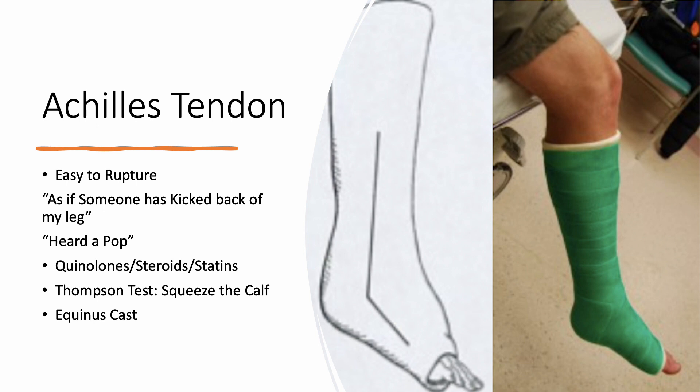What you do is perform a calf squeeze test, which is called the Thompson test. When you squeeze the calf, the ankle doesn't move. How do you treat this? You put them in an equinus cast — you put the foot in plantar flexion. So you are actually placing a plaster with the ankle joint in an unstable position. This was the same position where the woman wearing high heels twisted her ankle, but that's the way you treat Achilles tendon rupture, and then bring them back to the fracture clinic.